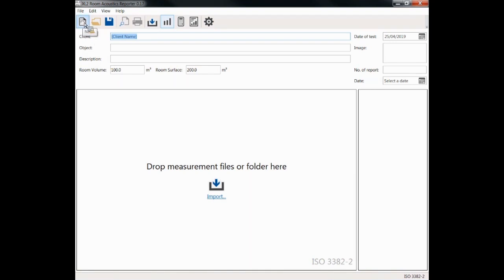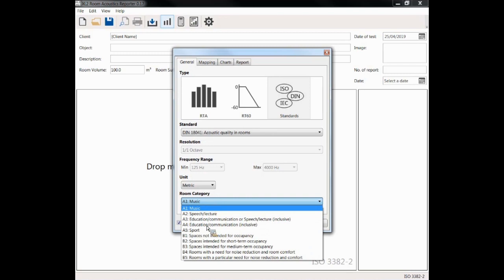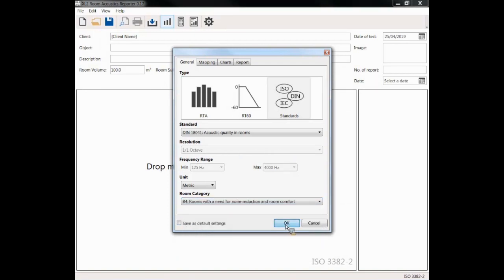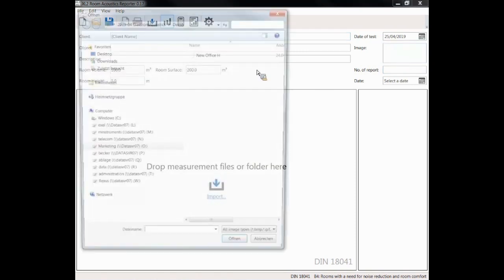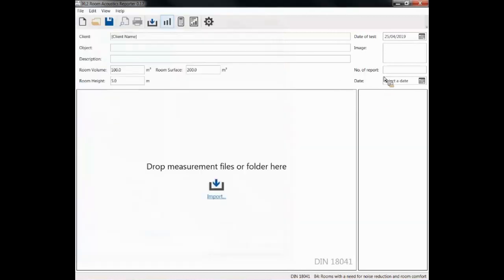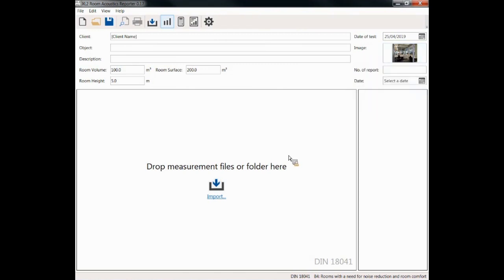Let's start from scratch. We take a new file, we select standards. So here are the standards that are already implemented. There will be more to follow. Now for the time being, I select the DIN 18041 and I have to decide which type of room I am looking at. So let's look here for a room with need for noise reduction and room comfort. So having made this selection, we can confirm. Now we import for instance a picture of the room. We have maybe taken a photo just as a reference. I am going to show you that so that you get an impression. Here when I hover over it you see this is a typical office here in our company that was newly built. I am going to show you the acoustic performance of this room.